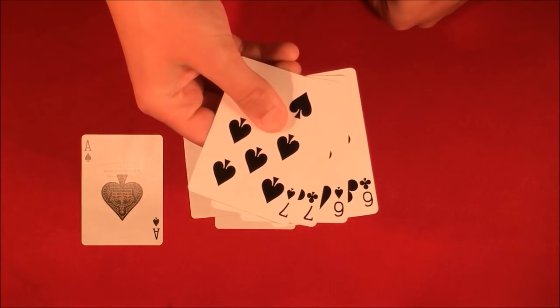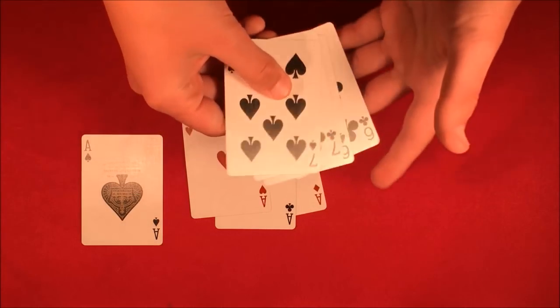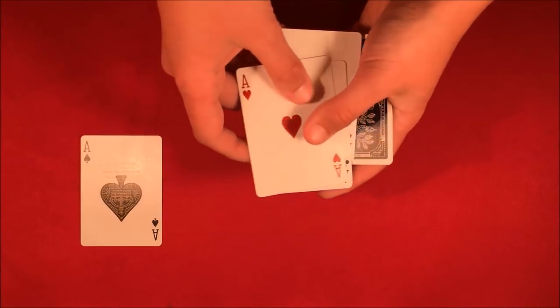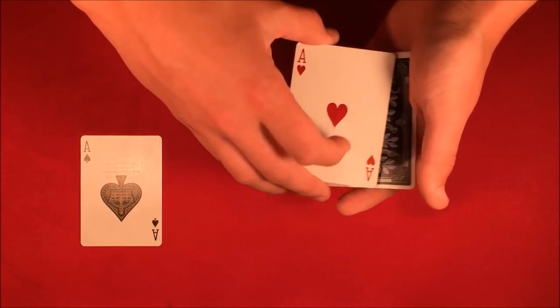So in this case, I'll show you. I have four random black cards, and as you can see, I have the four Aces. Now I'm going to be leaving the Ace of Spades on the table for now, and I'll show you.